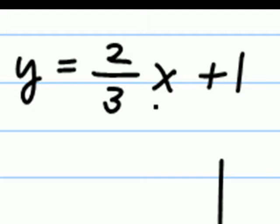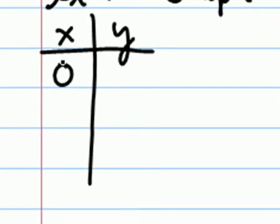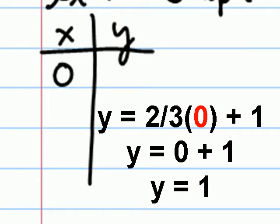we'll choose x values, plug it into the equation, and find the corresponding y values. Now, because the slope here has a denominator of three, our wise choices for x would be values that will cause the fraction to go away. For instance, if x is zero, then this whole term disappears, and y becomes one.